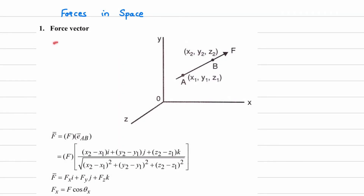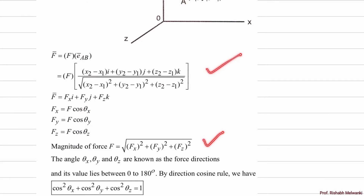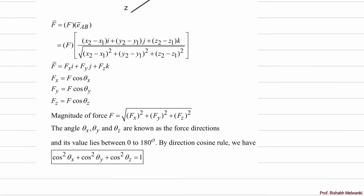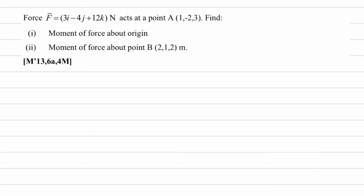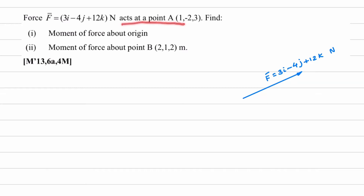We have already discussed force vector: a force in space passing through points A and B, with force magnitude and direction angles θx, θy, θz. Now we will solve some numericals. The force vector is given as F bar = 3i − 4j + 12k Newton, acting at point A with coordinates (1, −2, 3). We need to find the moment of this force about the origin O (0, 0, 0) and about point B with coordinates (2, 1, 2) meters.